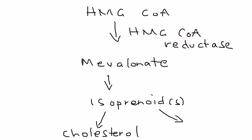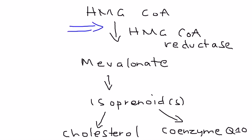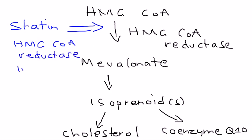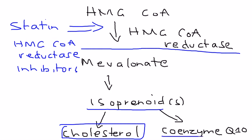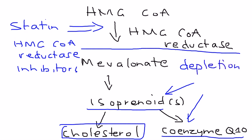There's another byproduct known as coenzyme Q10. Statins work right at that enzyme — they block it, which is why they're known as HMG-CoA reductase inhibitors. When you block this rate-limiting step of cholesterol synthesis, you prevent anything from occurring afterwards: you don't get cholesterol, which is good, but you're also depleting isoprenoids and coenzyme Q10. It is believed that the depletion of isoprenoids and coenzyme Q10 contributes to muscle cell death.